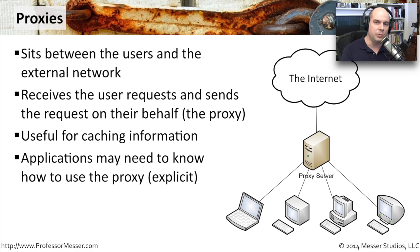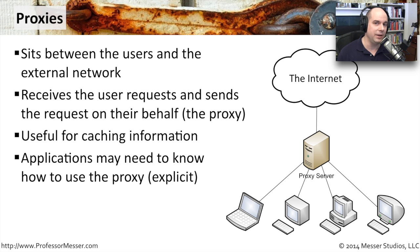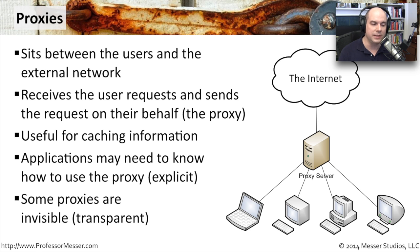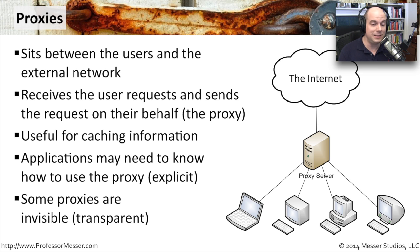There are two ways to configure how your systems use the proxy server. An explicit proxy requires you to configure your browser and other applications to know that the proxy is there and to use it. A transparent proxy, on the other hand, requires no configuration changes for end users — no browser settings, no third-party app settings. However, some applications may not work properly through a transparent proxy, because the proxy is still modifying network communication.